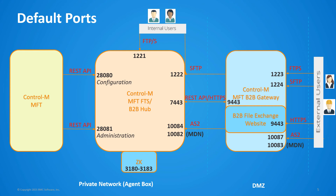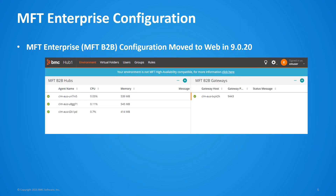Here are the default ports used in the MFT Enterprise environment. Starting in 9.0.20, the hub uses port 7443 to communicate with the gateway on port 9443 by default. With high availability, these ports must be open from all the gateways to all the MFT hubs in the cluster.